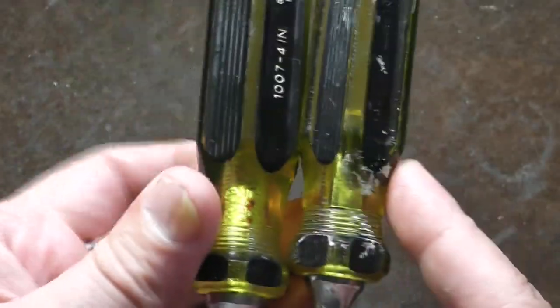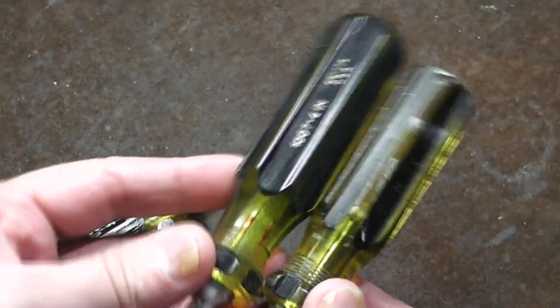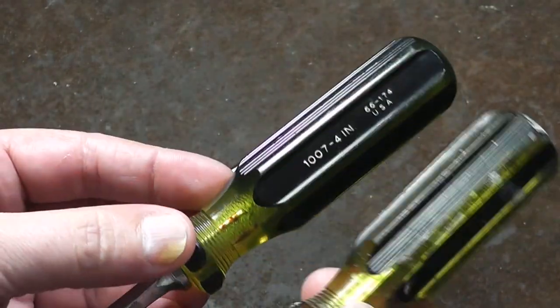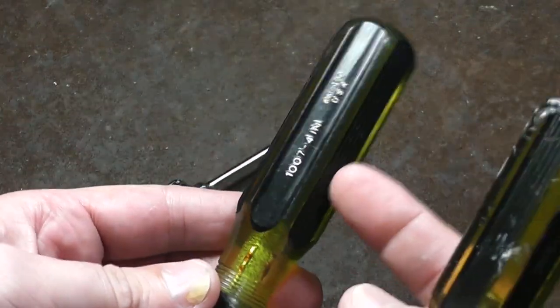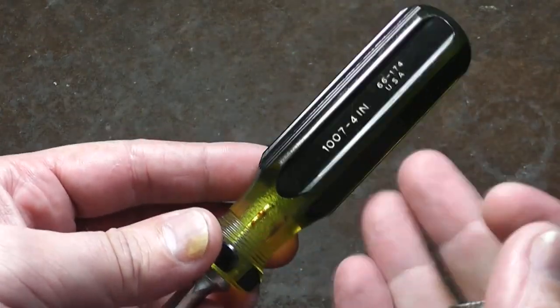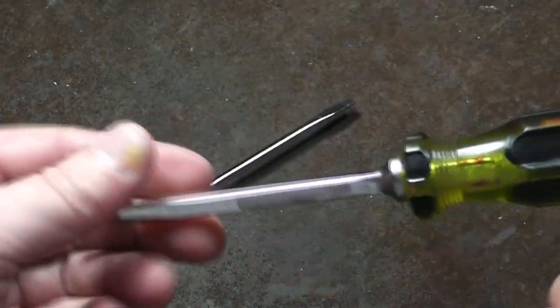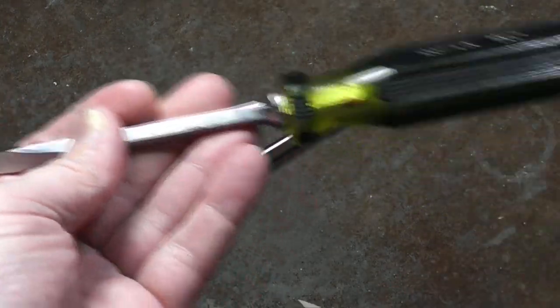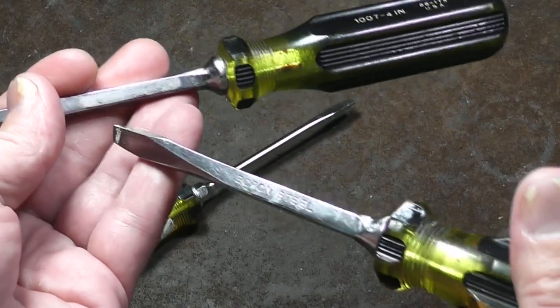What I find interesting is the one that was stamped boron steel, the handle's a little bit shorter. Then when they moved on through the next generation, the handles got a little bit bigger.